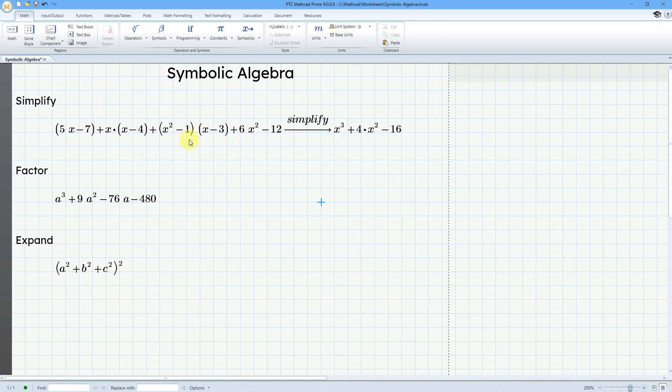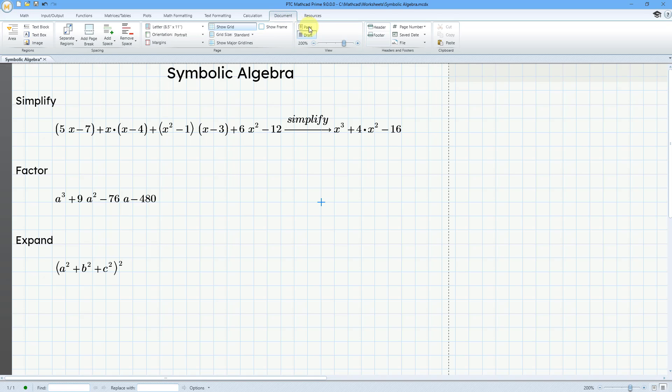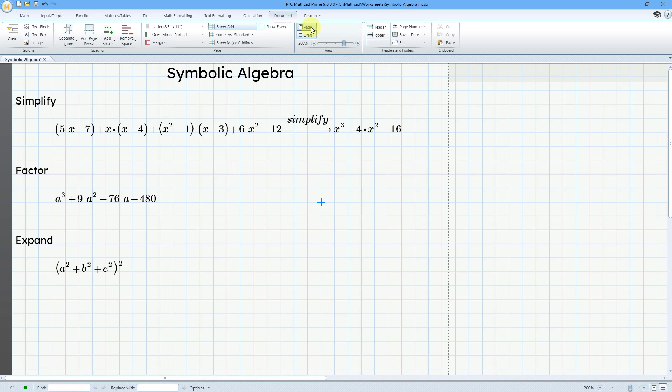We find that all these different terms reduce down to x cubed plus 4x squared minus 16. Let's go to the Document tab and change from the Draft view to the Page view. It automatically went to the Draft view when it went off the sides of the sheet.